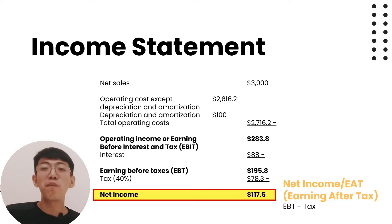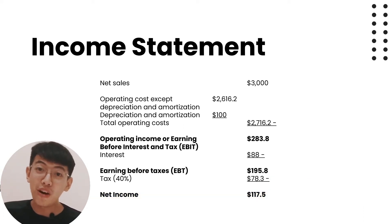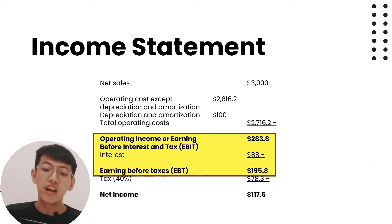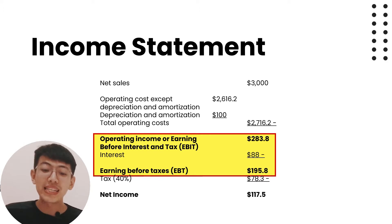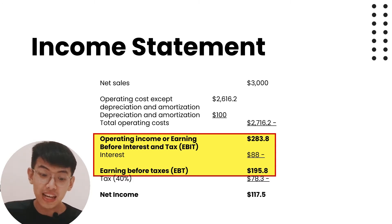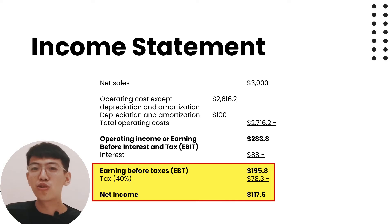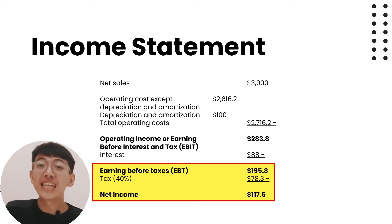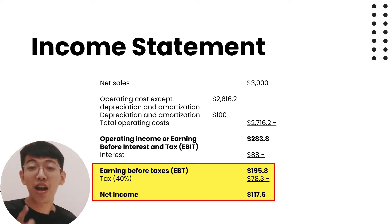In this case, EBIT is 283.8 dollars and interest is 88 dollars. So EBT equals EBIT minus interest: 283.8 minus 88 equals 195.8 dollars. The tax rate is 40%, so tax equals 40% times EBT, which is 40% times 195.8, equals 78.3 dollars. Therefore, net income equals EBT minus tax: 195.8 minus 78.3 equals 117.5 dollars.